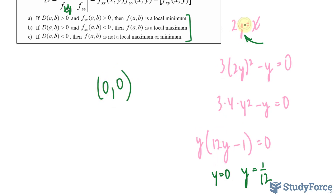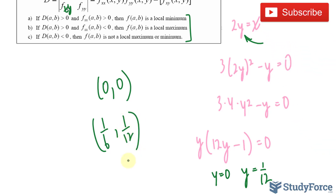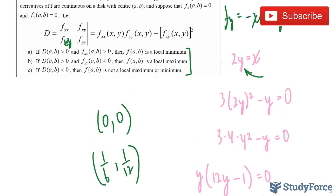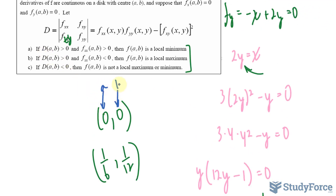Now we substitute these outputs into x = 2y. Substituting y = 0 gives the point (0, 0). Substituting y = 1/12 gives x = 1/6, so the second critical point is (1/6, 1/12). These are your critical points, and consistent with the criteria notation, the x-coordinate and y-coordinate are referred to as A and B respectively.